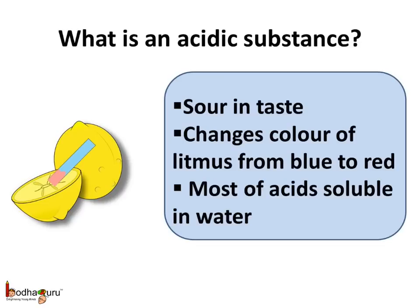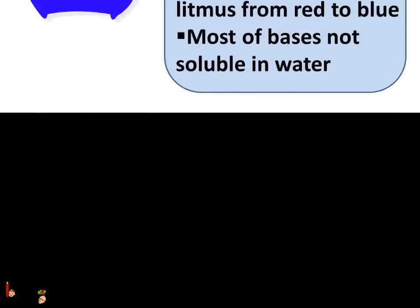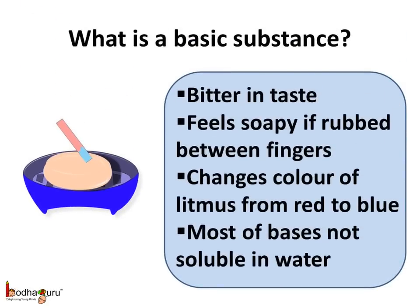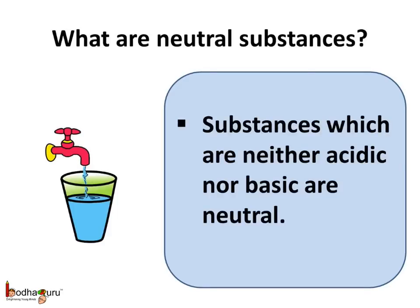Now let us compare acid with base. Acid tastes sour, changes the colour of litmus paper from blue to red, and most acids are soluble in water — their solution can carry electricity. A base tastes bitter, feels soapy when rubbed between two fingers, changes the colour of litmus paper from red to blue, and most bases are insoluble in water, but their solution can carry electricity. Substances which are neither acidic nor basic in nature are neutral substances.